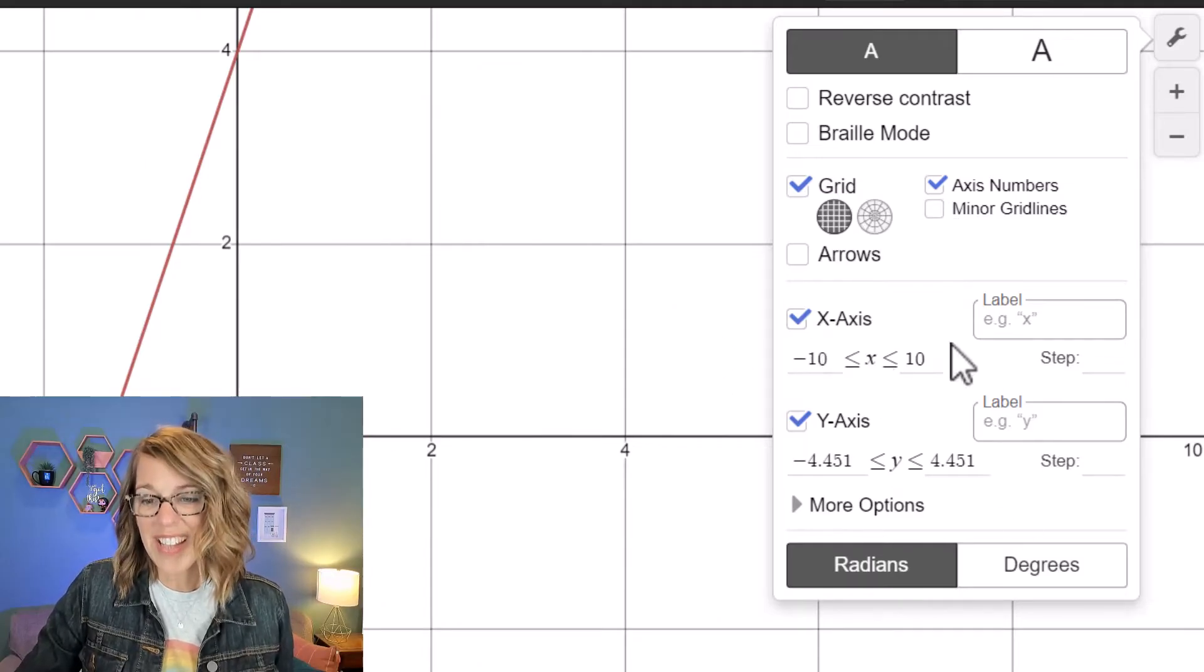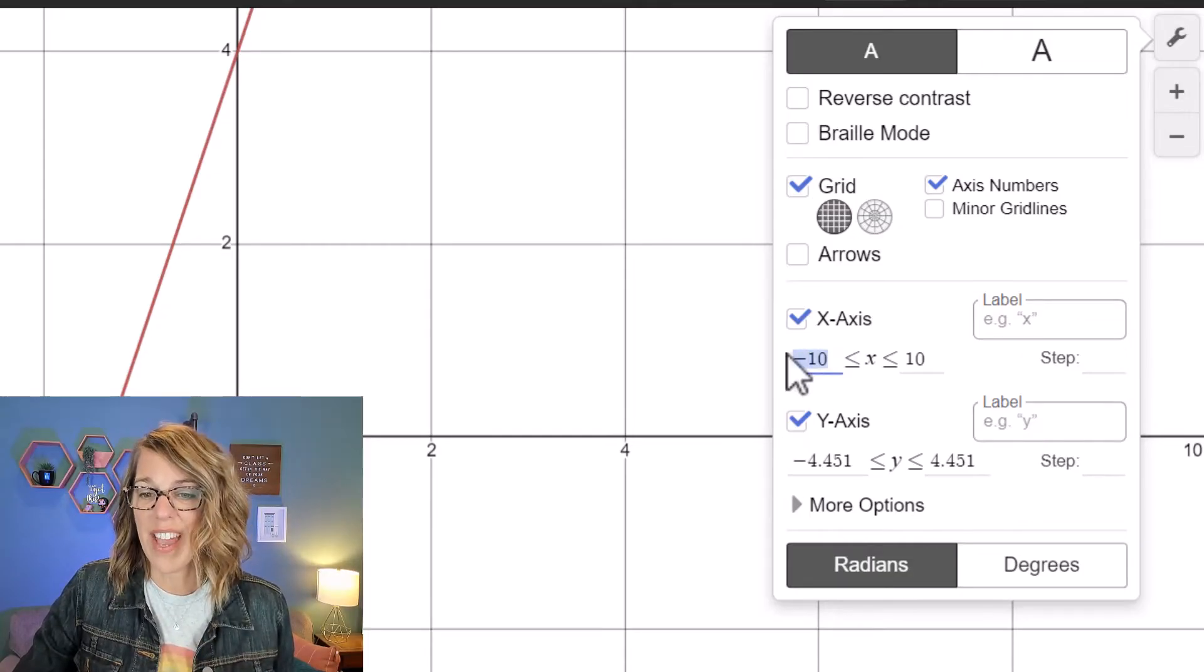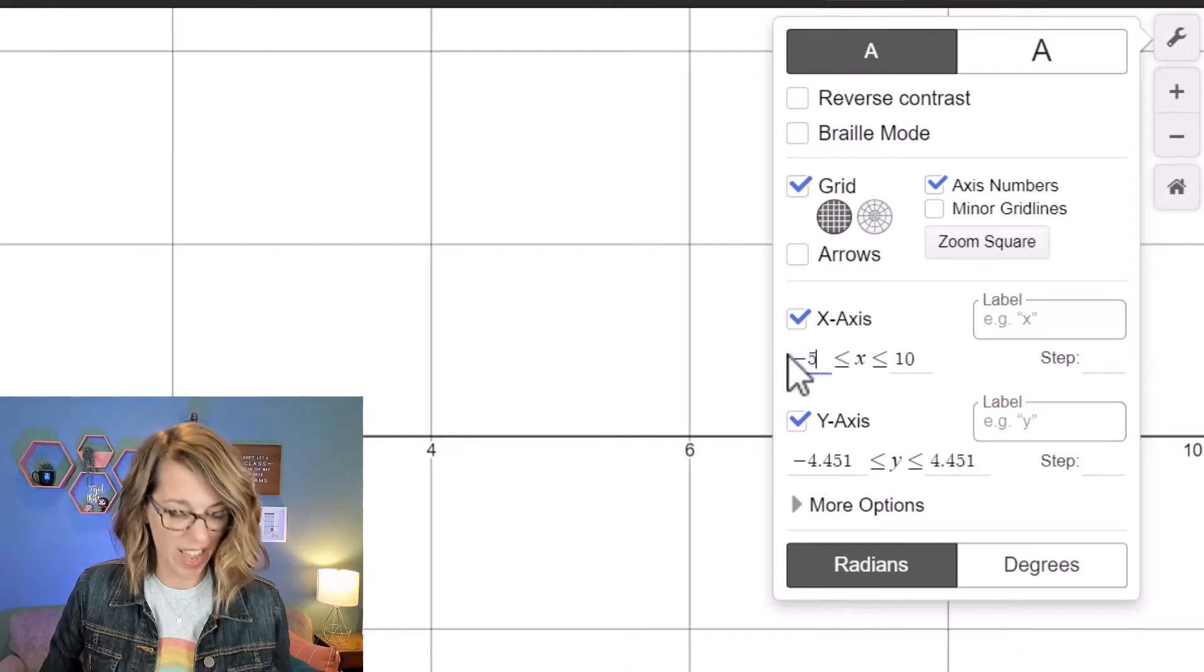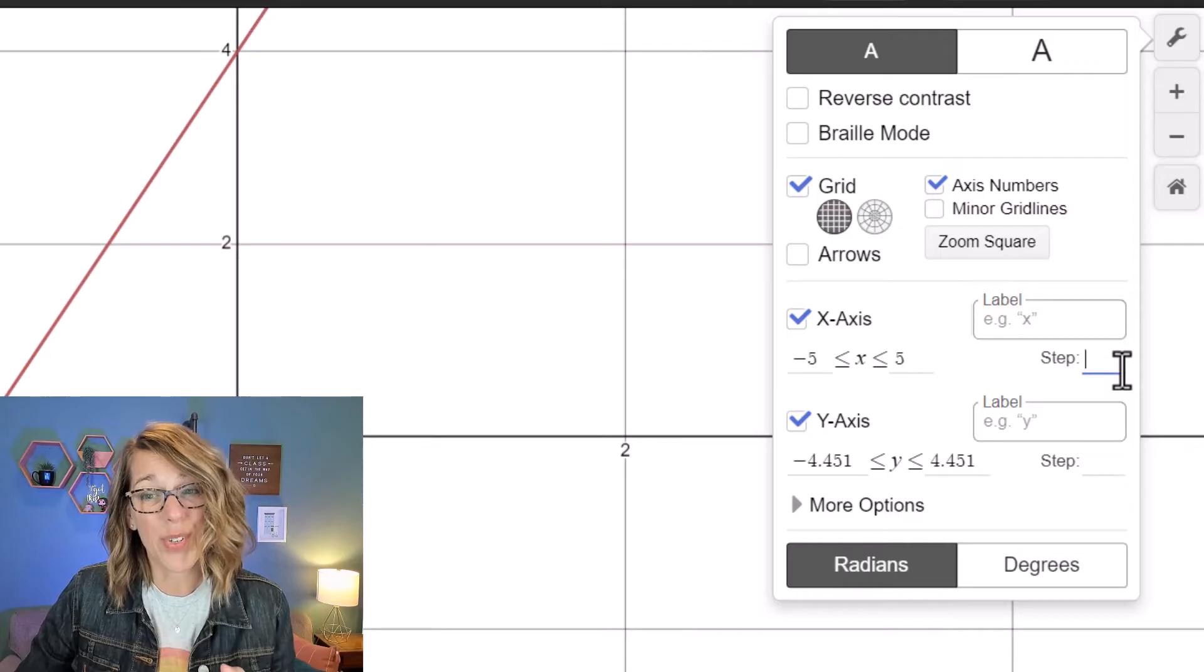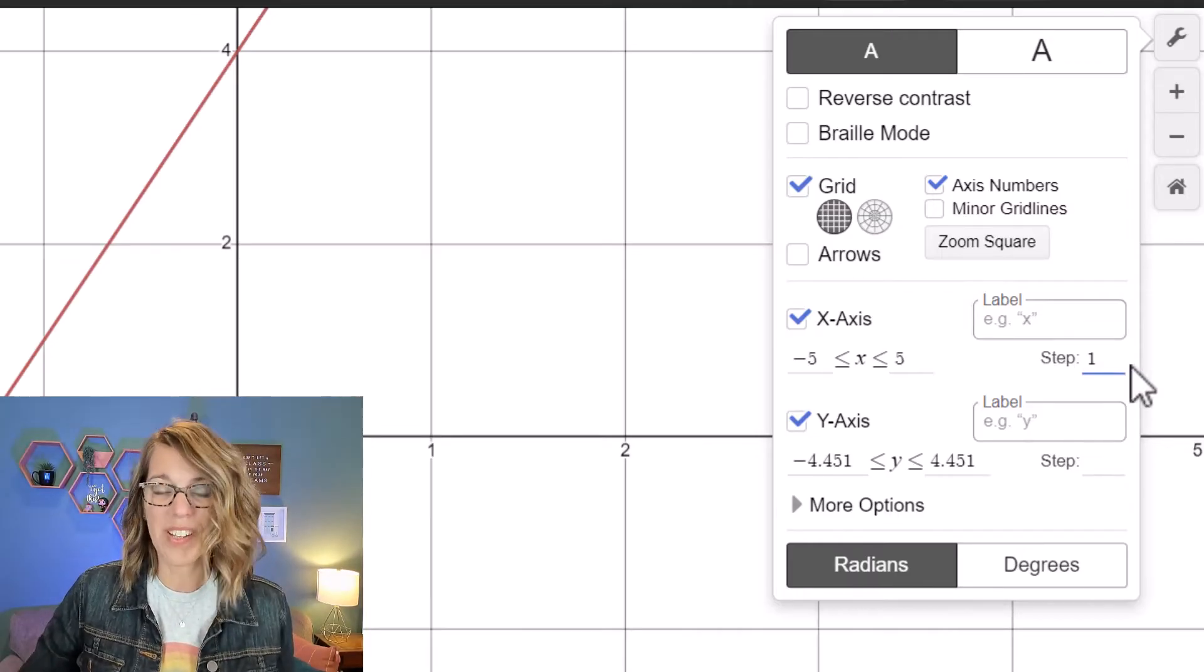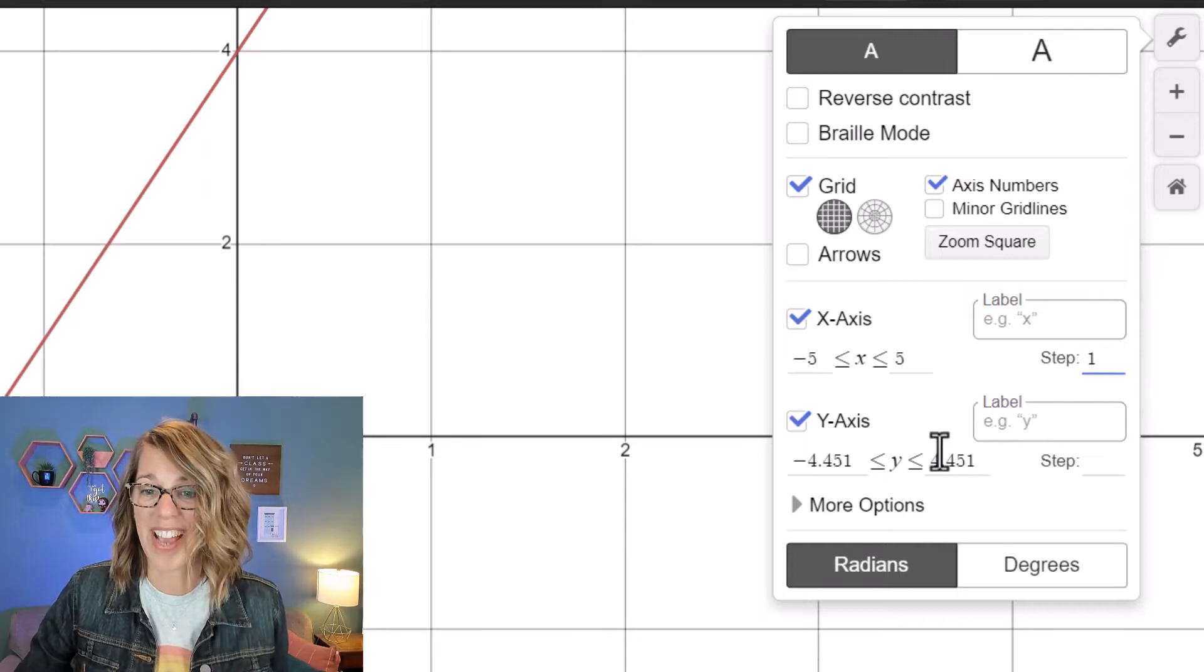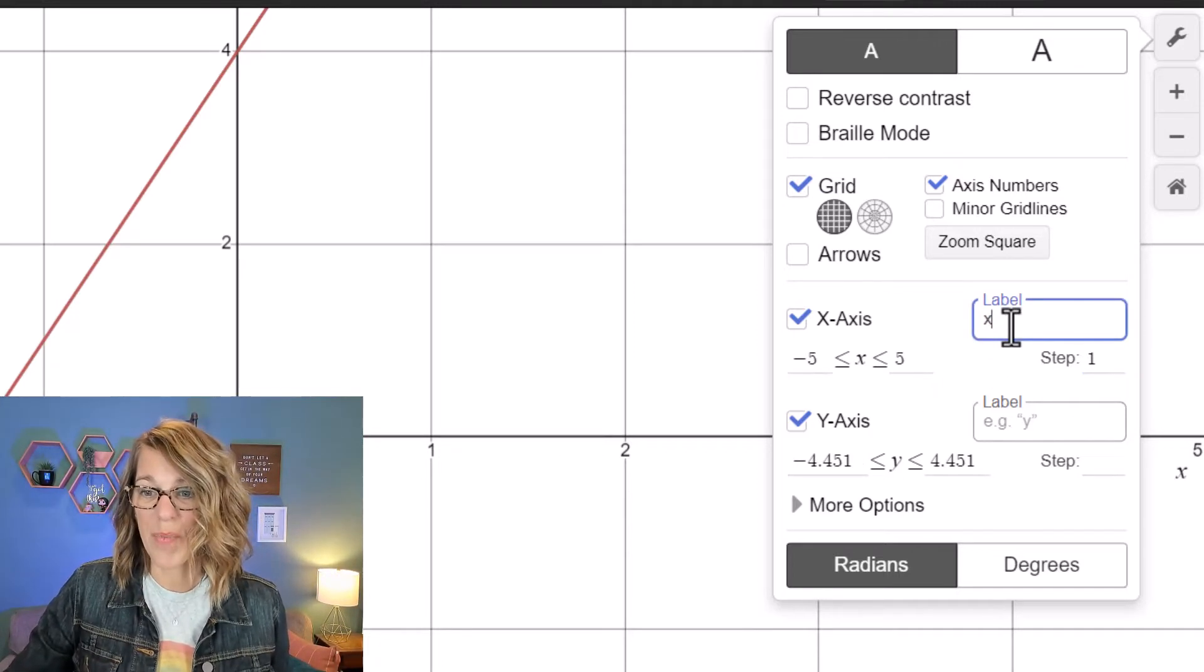Now this next area here is to change your viewing window. Let's say that instead of having an x min and max of negative 10 and 10, I want to go from negative 5 to 5, and instead of tick marks at 2, I'm going to change my step to be 1 so it changes those tick marks and labels at 1 along my x-axis. I can also type a label on my x-axis if I want to.